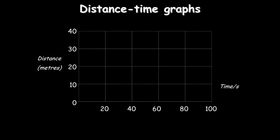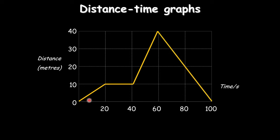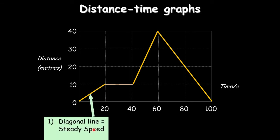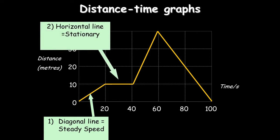You need to know about distance-time graphs and speed-time graphs. Distance-time graphs are slightly easier. In this first section, it starts at a distance of zero and goes up to 10 in 20 seconds. Because it's a straight line, it means it has a steady speed — steady speed from 0 to 10 meters.